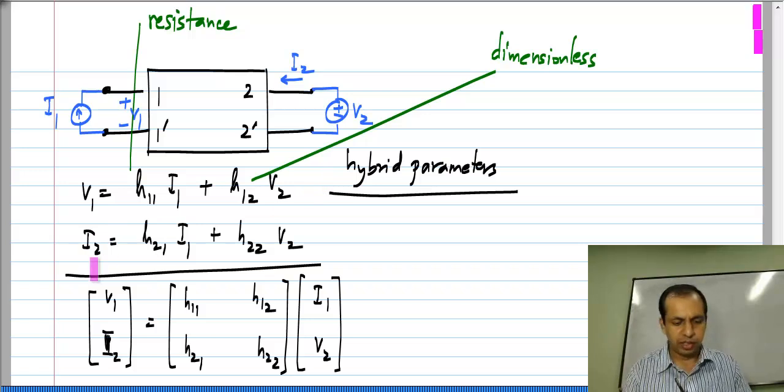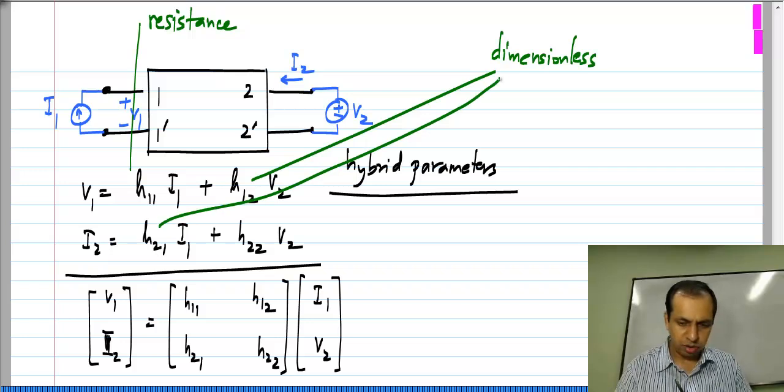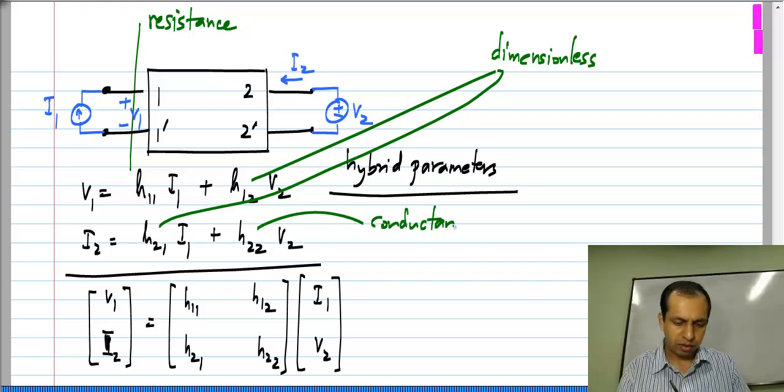Similarly, in the second expression I2 equals H21 times I1, so this has to be dimensionless H21. This is also dimensionless and finally, this is a current equaling something times a voltage, so H22 has dimensions of conductance. So the 4 parameters do not have the same dimensions, so they are called hybrid parameters.